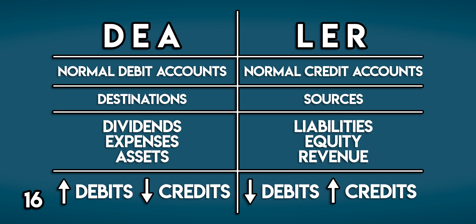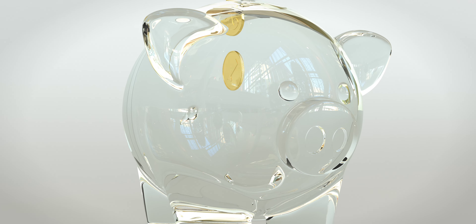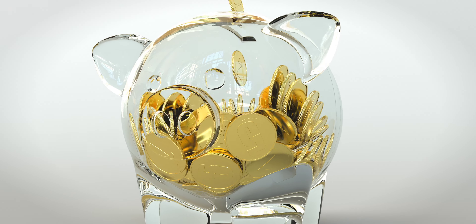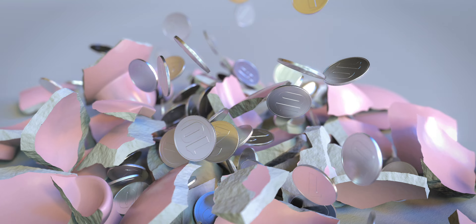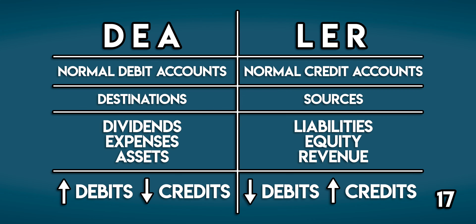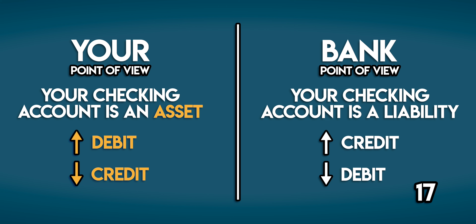Debits and credits always work this way, but there is one situation that can cause confusion. If you deposit cash into a checking account, the bank credits your account, increasing your balance. But in accounting, cash is a type of asset — a normal debit account — so credits should decrease your cash balance and debits should increase it. From the bank's point of view, your checking account is actually a liability, so they debit their cash account, increasing their assets, and credit your checking account, increasing their liability owed to you. So debits and credits are never backward.